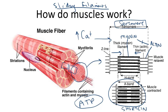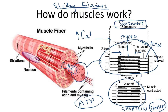When the muscle relaxes again, the filaments slide back to their original positions. So when muscles shorten, they contract. And when they go back to their original positions, they are relaxed. And this is the sliding filament theory.